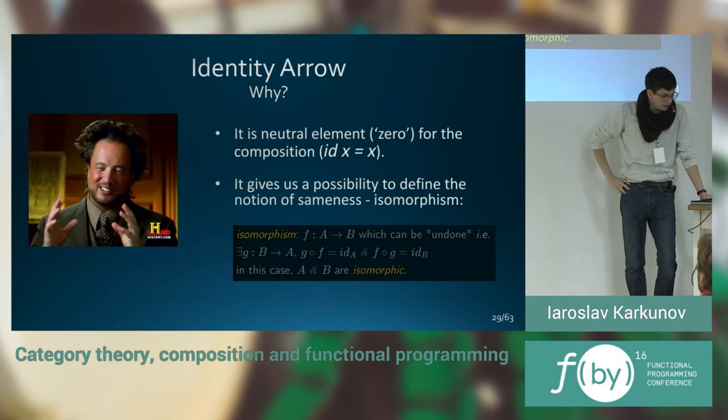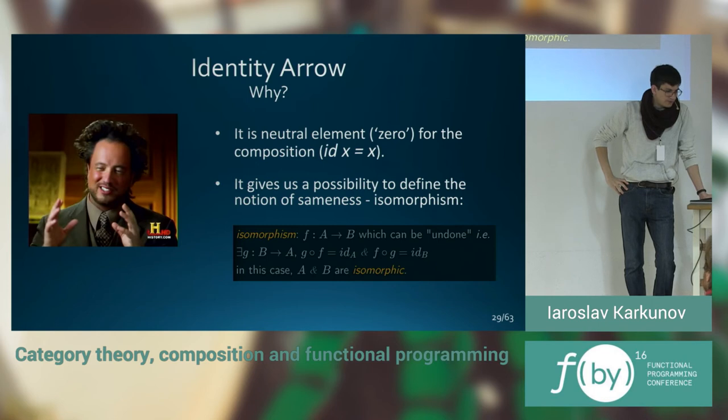Why do we need identities? As I have said, it's a natural element for the composition. And also, it gives us a possibility to define the notion of sameness. As a mathematician said, isomorphism.